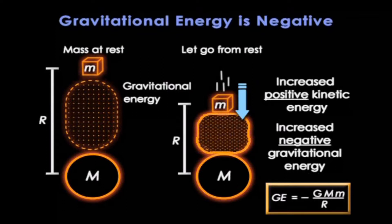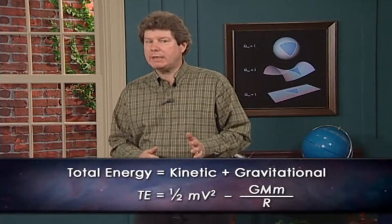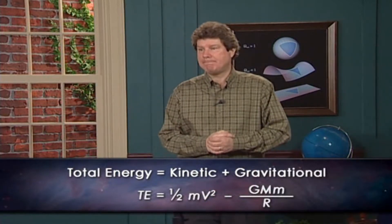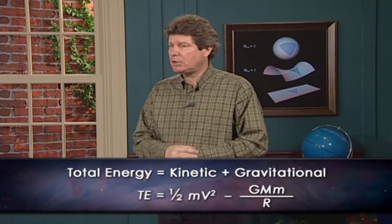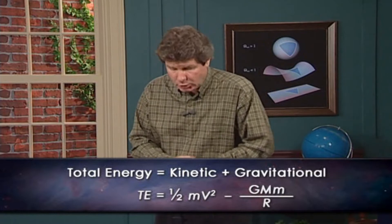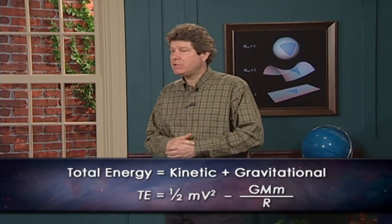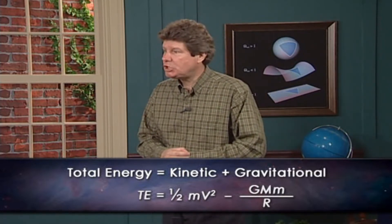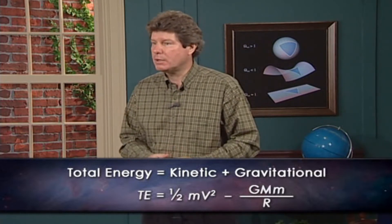Hence, our formula GE is -GMm/R. Well, we're now ready to make progress. Let's look at the total energy of our rock, TE. It's just the sum of the kinetic and gravitational energies, which in equation form is 1/2 mv² - GMm/R.